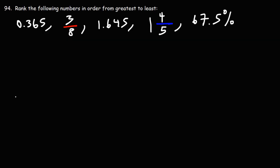So starting with 3 eighths, 3 eighths is 3 times 1 eighth. And if you recall, from the notes I gave you in the previous problem, 1 over 8 is 0.125. If you multiply that by 3, you get 0.375.